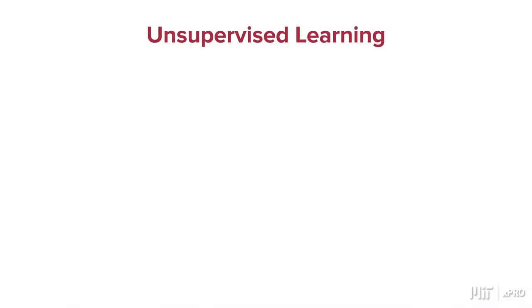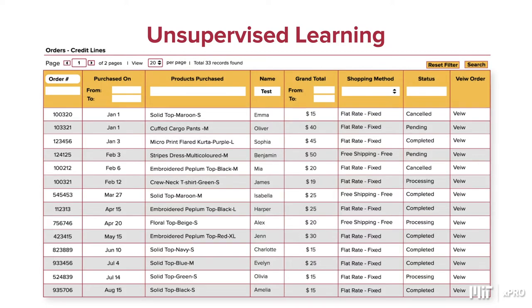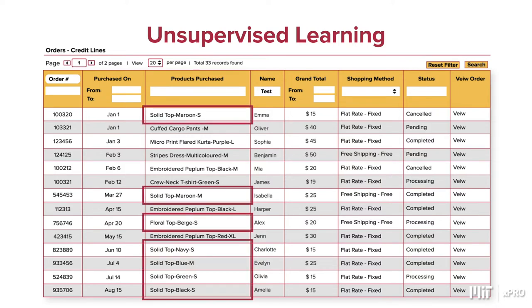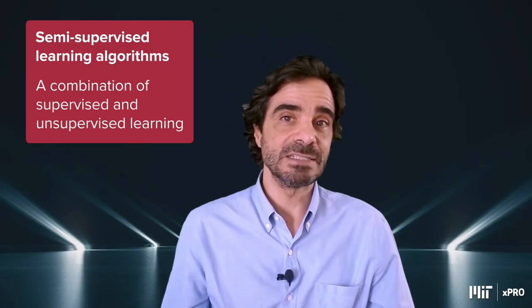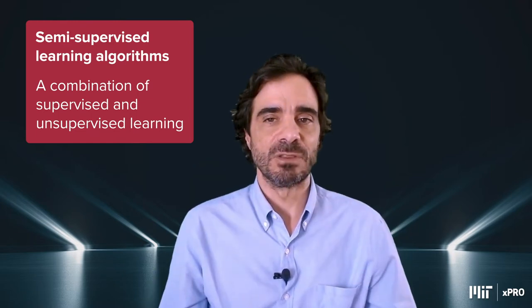Another category of algorithms is unsupervised learning. These try to identify clusters automatically and generate their own labels. For example, one may have the history of all purchases in a retail chain, and the machine learning algorithm may automatically find the most representative set of 10 customer segments such that their purchases are similar. There are also algorithms that combine supervised and unsupervised learning — the so-called semi-supervised learning algorithms.